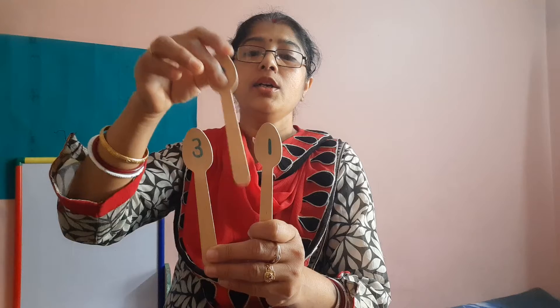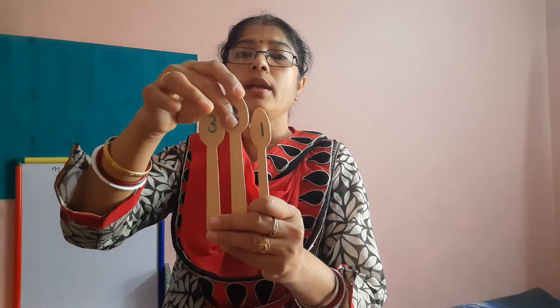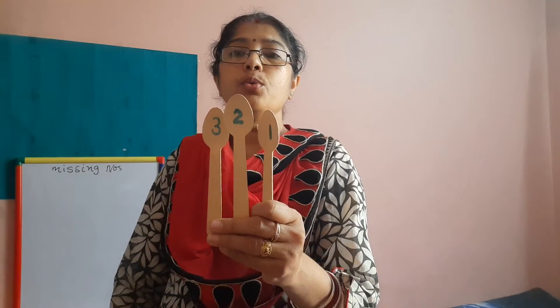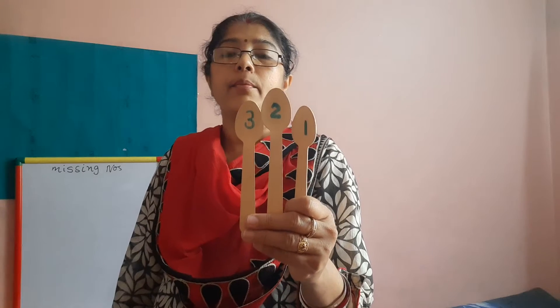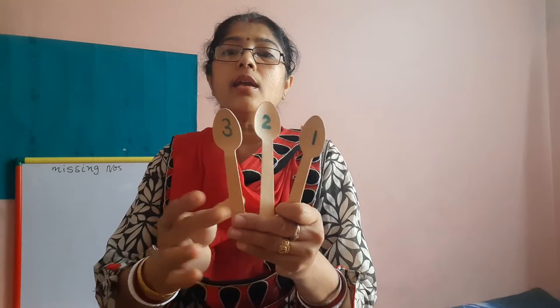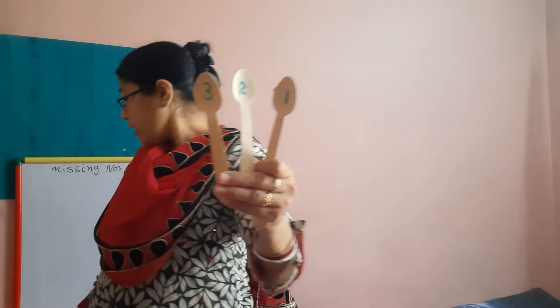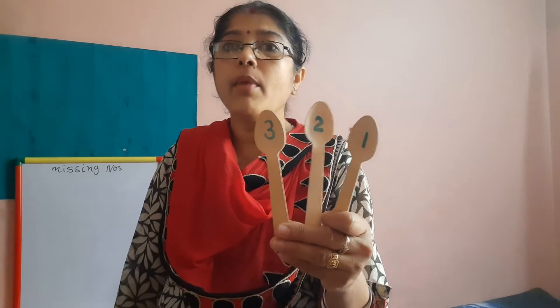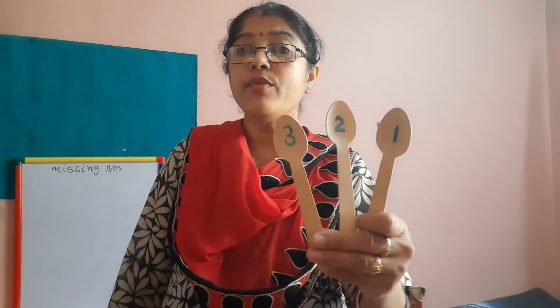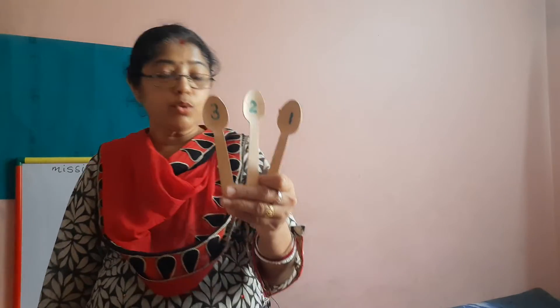And that number is number 2. Ye hai number 2. Number 1 and 3 ke biech mein joh number tha, that was missing. Ma'am ne kahi chhod diya tha usko. Arie number 2 is missing. So we have to write number 2. Hame number 2 likhna hai.